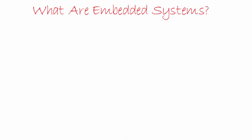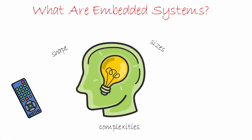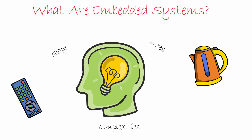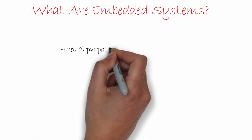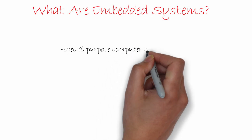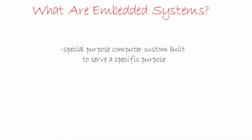Embedded systems come in a wide variety of sizes and complexities and hence are a bit hard to define. Let's try to get a basic understanding of what an embedded system really is and how to classify them. A simpler definition would be: an embedded system is a special-purpose computer custom-built to serve a specific purpose.